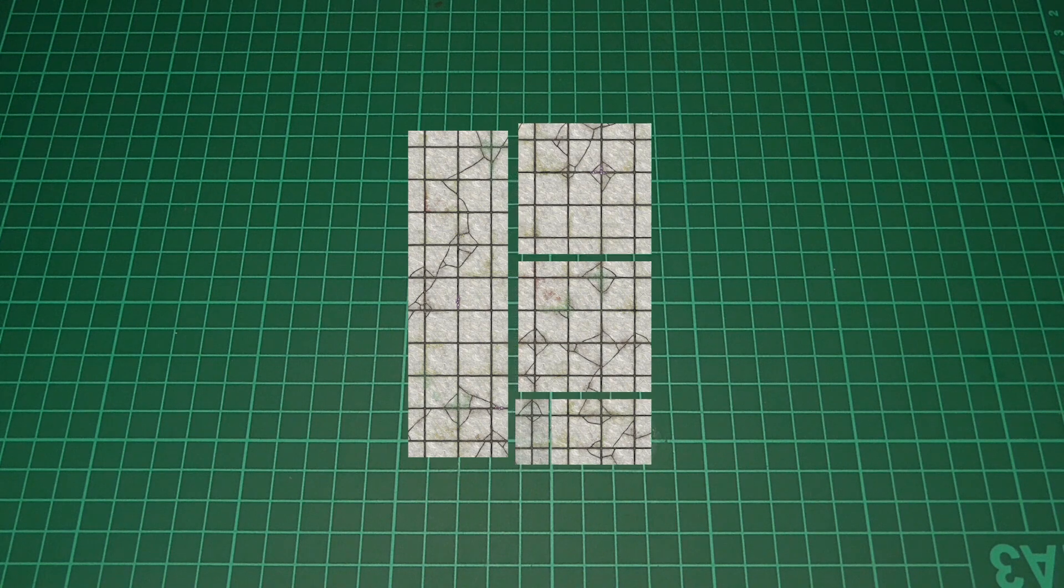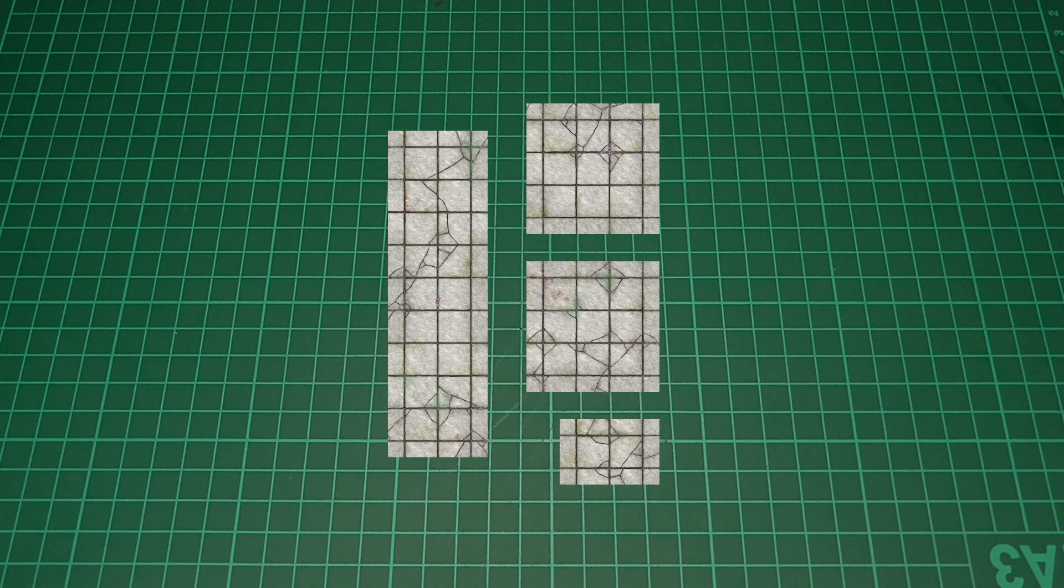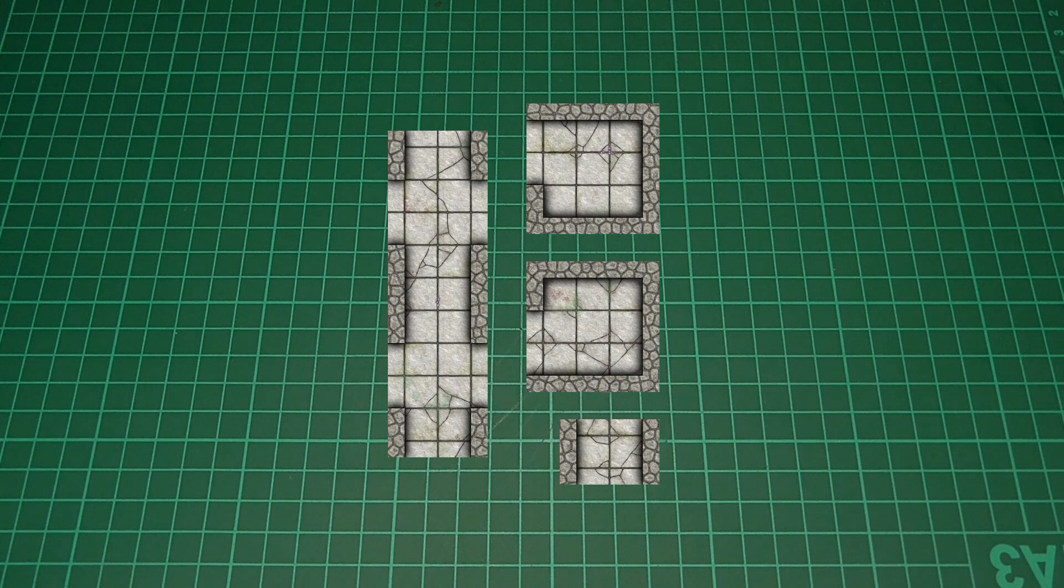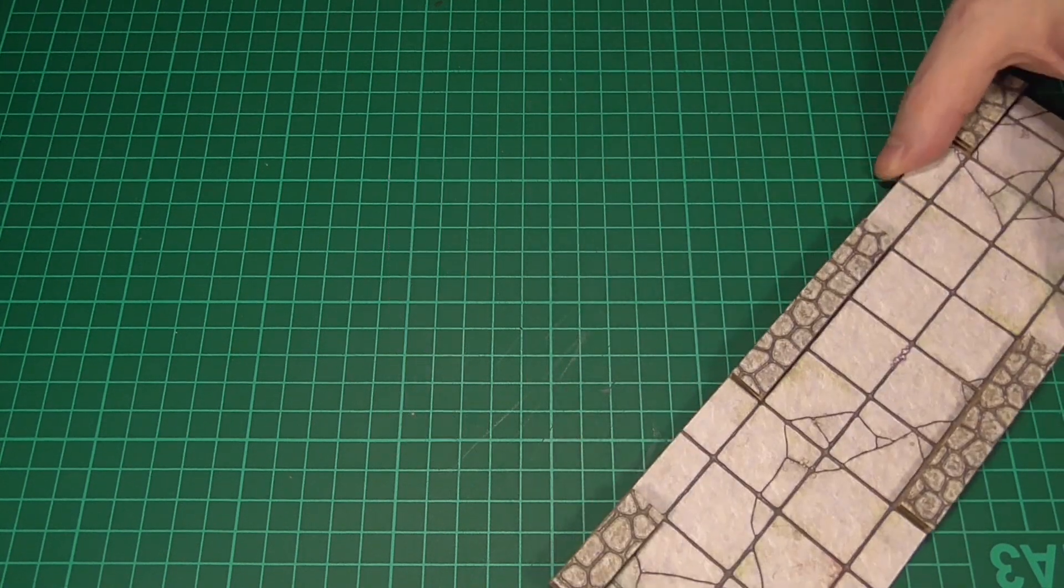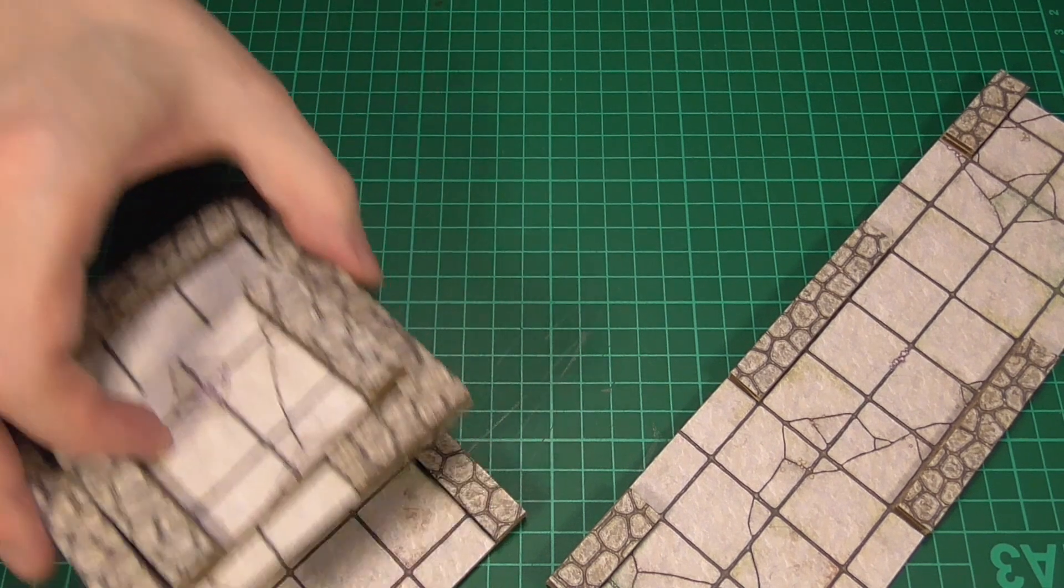We'll then cut them to the sizes that you can see here and add the walls to these sides in the usual fashion, so that we end up with four more dungeon tiles. That's these four that you can see me laying out on the table right now.